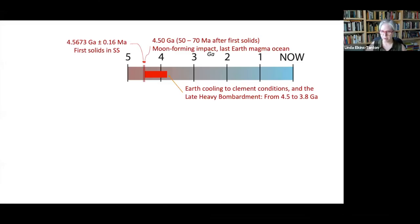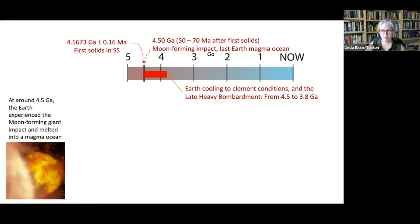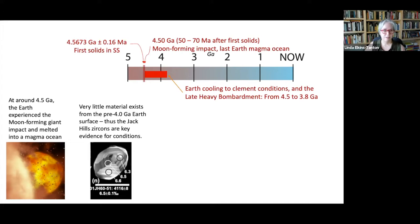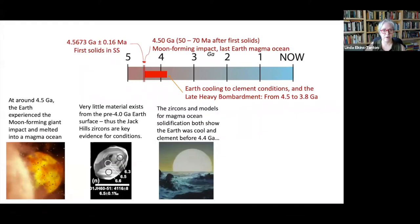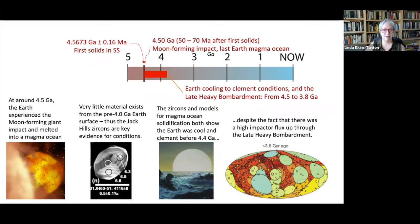The last time we were talking about Earth from about 4.5 to about 3.8 billion years ago. Around 4.5 billion years ago was the moon-forming giant impact on the Earth, which melted the Earth into a magma ocean. Very little material exists on the Earth that is dated to before 4 billion years. Thus, these Jack Hills zircons are key evidence for conditions on the early Earth. The zircons and models for magma ocean solidification both show that the Earth was cool and clement before 4.4 billion years ago, despite the high impact flux through the late heavy bombardment.